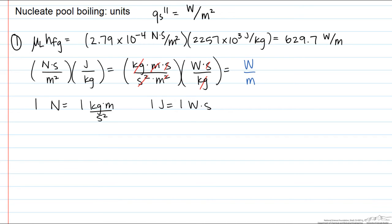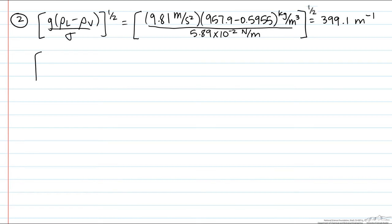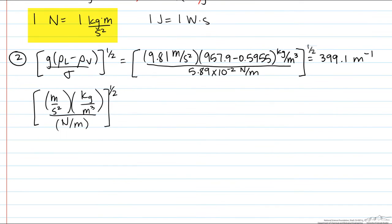Now, let's look at the second term. So here we have meters per second squared, kilograms per meter cubed, and then on the bottom, newtons per meter. And again, a newton is a kilogram meter per second squared. And so now, if we do the canceling,